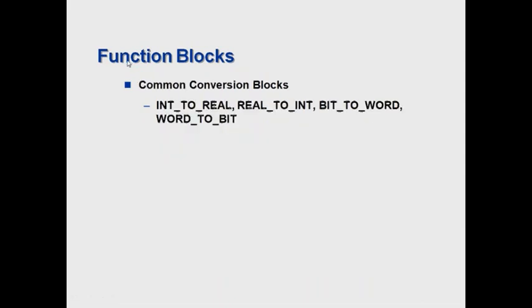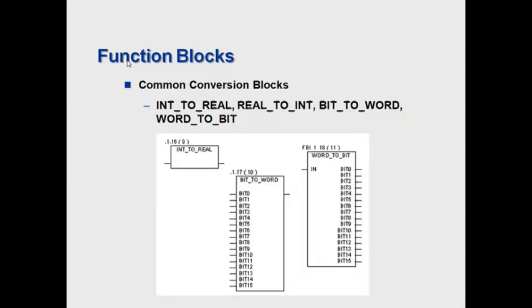Common conversion blocks include int to real, real to int, bit to word, or word to bit. Some examples of these blocks are shown here, which simply converts one data type to another data type. In the case of bit to word, we have to input the several bits into the function block, which will then output it into one word.